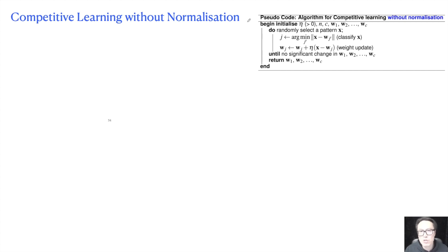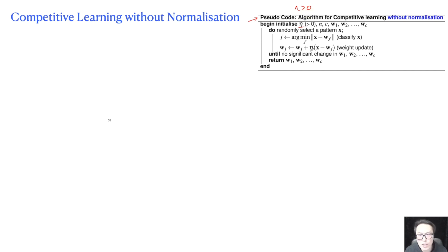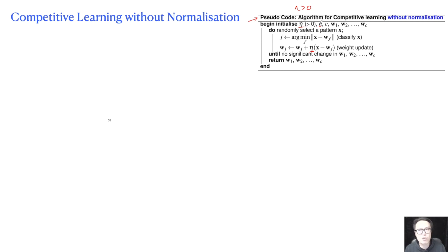This pseudo-code is for the competitive learning algorithm without normalization. Initially, we choose eta greater than zero — that is the learning weight — and n, which is the number of samples, so we have x1, x2, up to xn as the sample size.